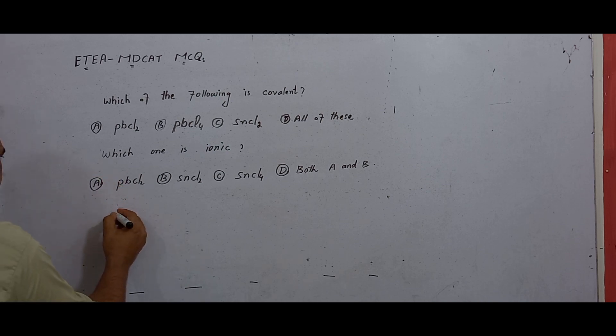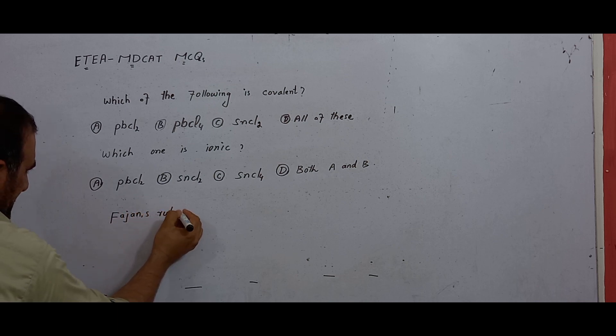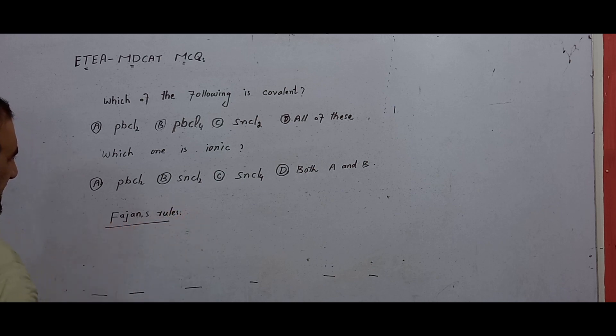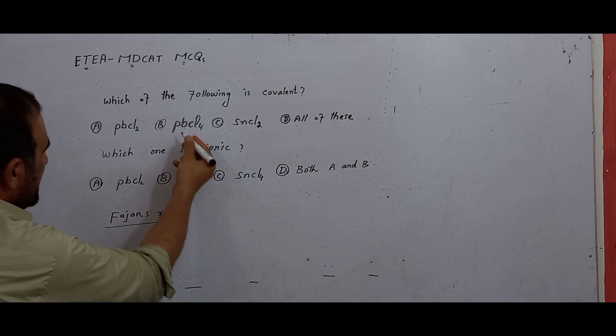According to Fajan's Rules, we compare cations to determine bond type.